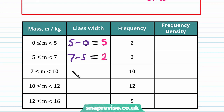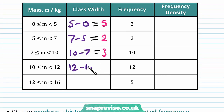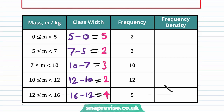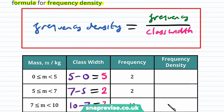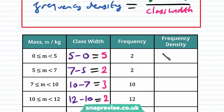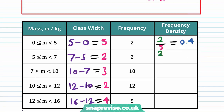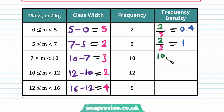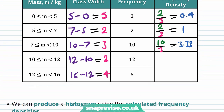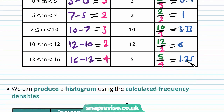Then 10 minus 7, which is 3. Then 12 minus 10 is 2. And finally, 16 minus 12 is 4. Using our formula, we can find the frequency densities. For the first one, frequency 2 divided by class width 5 gives 0.4. Then 2 divided by 2 gives frequency density 1. Next, 10 over 3 gives 3.33. Then 12 over 2 gives 6. And finally, 5 over 4 gives 1.25.